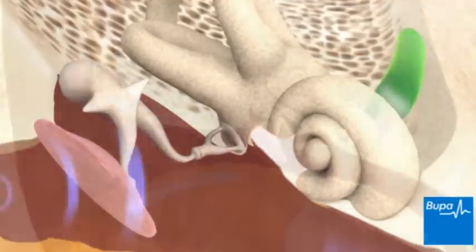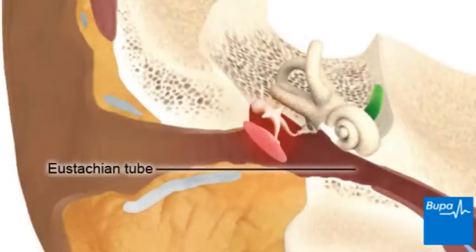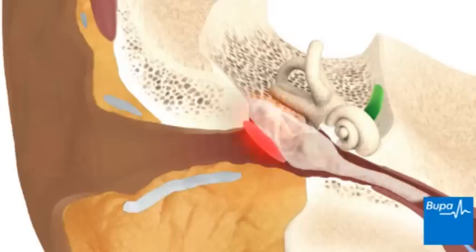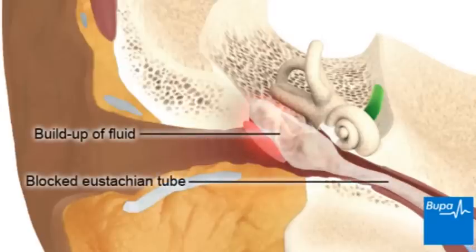Sometimes the eustachian tube becomes blocked. This may happen because of an infection or an allergy. It's most common in children. A blocked eustachian tube can cause fluid to build up in the middle ear. This is often known as glue ear because sometimes the fluid is sticky like glue.